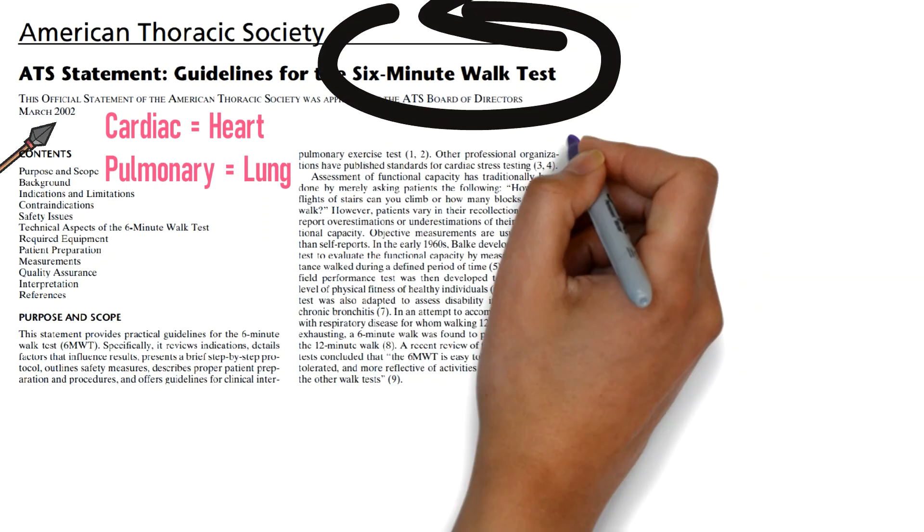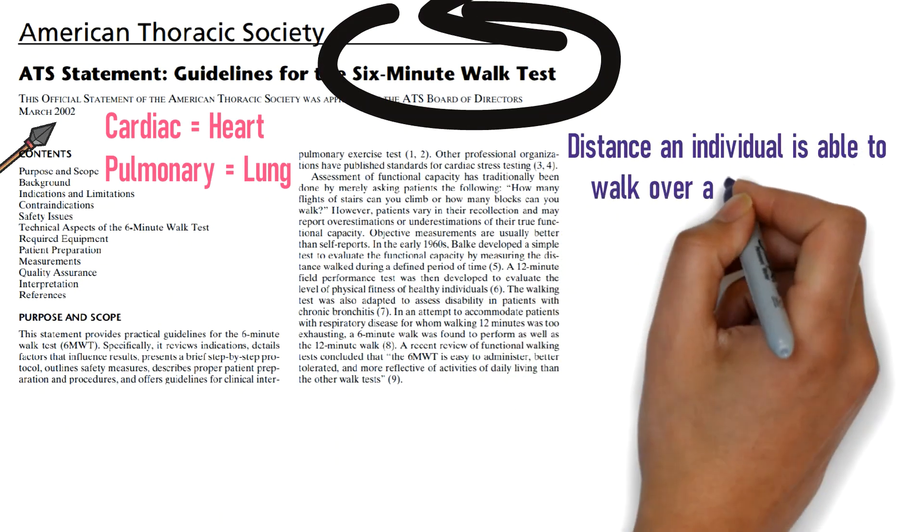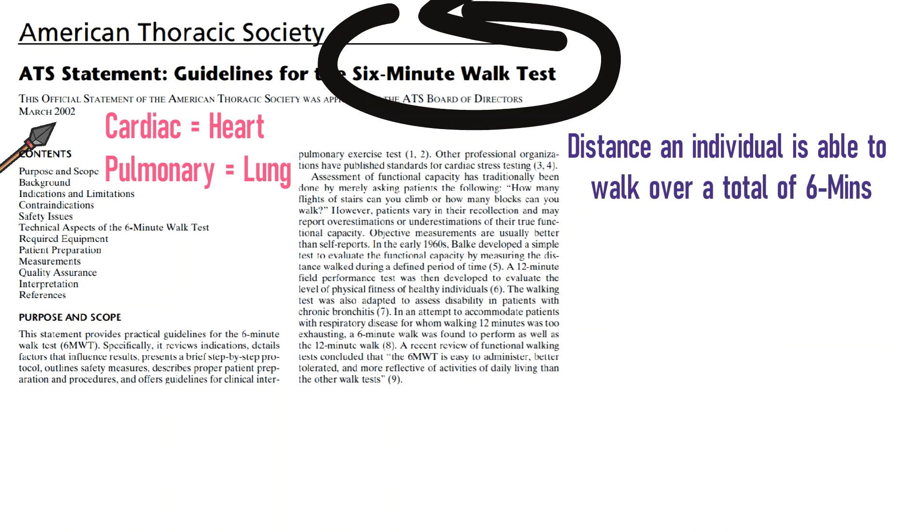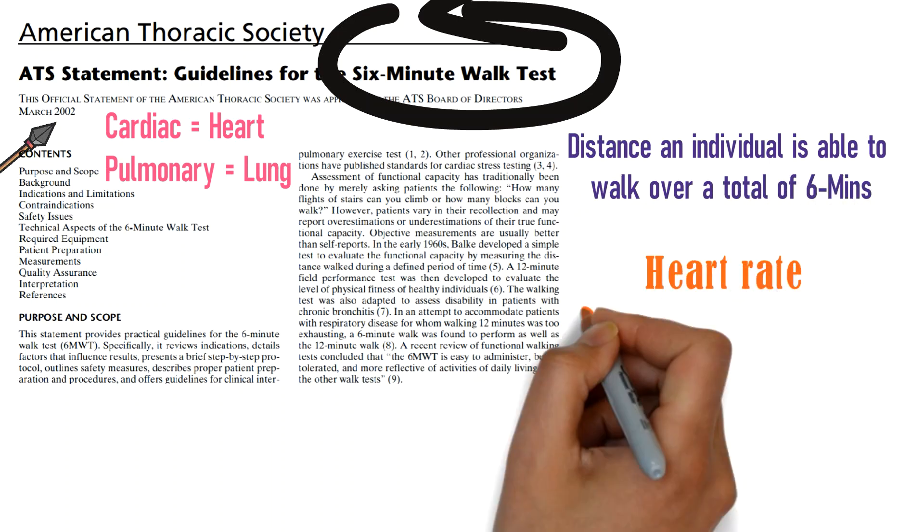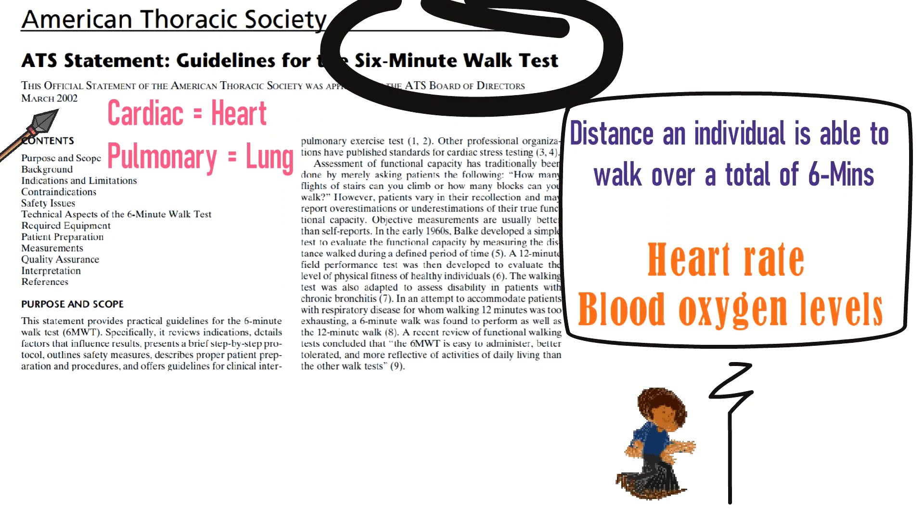This test measures the distance an individual is able to walk over a total of 6 minutes, along with other parameters like heart rate and blood oxygen levels, which are bound to fluctuate upon exertion.